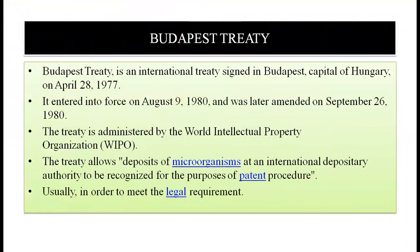The Budapest Treaty was signed in Budapest, the capital of Hungary, on 20th April 1977, and from 9th August 1980 it came into existence. Later on, it was amended many times. This treaty is administered by WIPO, that is the World Intellectual Property Organization, same as our previous agreements. This treaty allows deposits of microorganisms in an international depository authority, and such depositories have been established due to this Budapest Treaty.